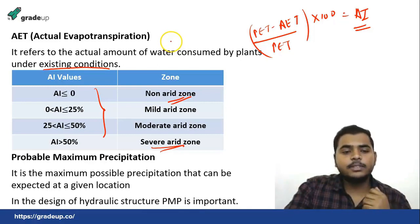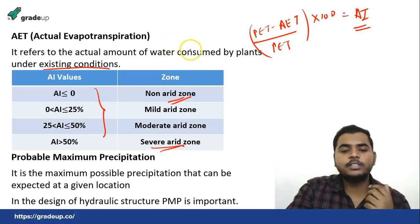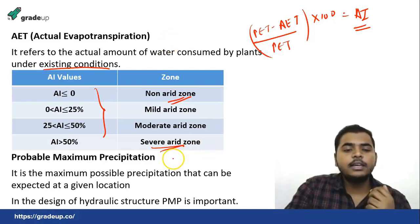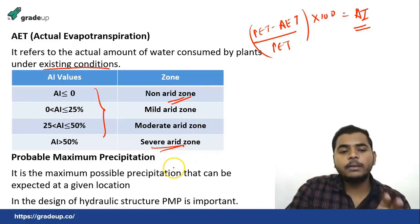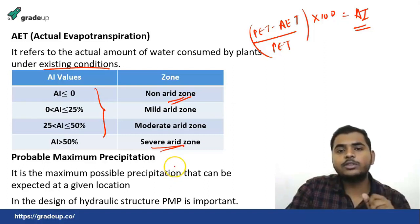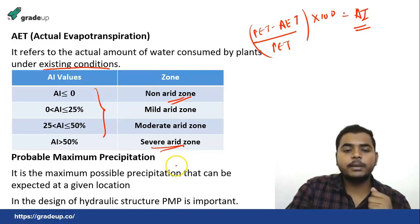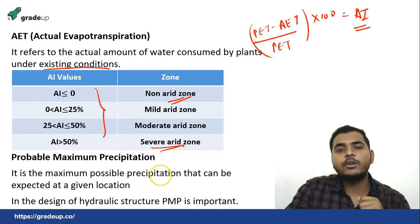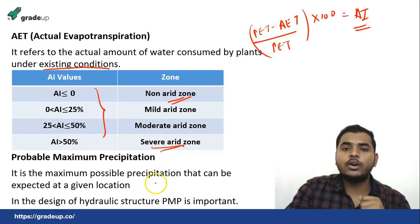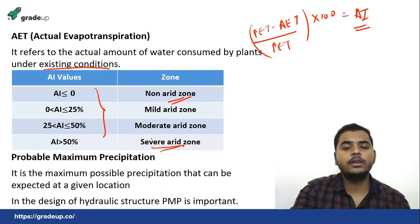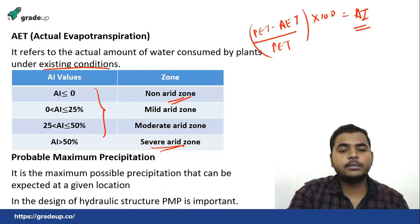The next term is Probable Maximum Precipitation, or PMP. It is the maximum possible precipitation that can be expected at a given location. If at a particular location the maximum amount of precipitation occurs due to severe rainfall, that is PMP. This data is very important for the design of hydraulic structures like dams or canals.